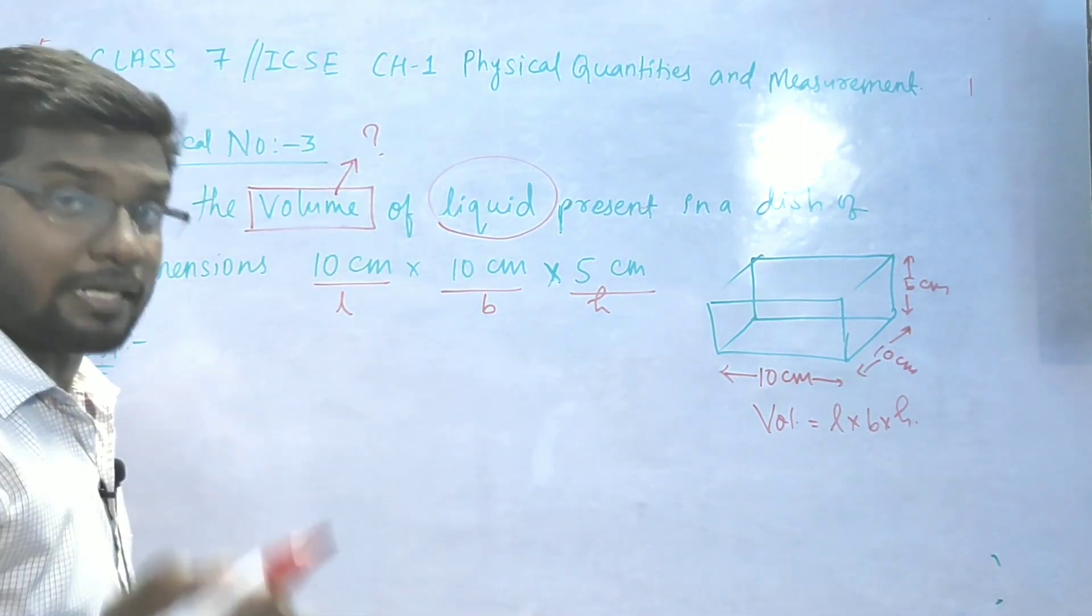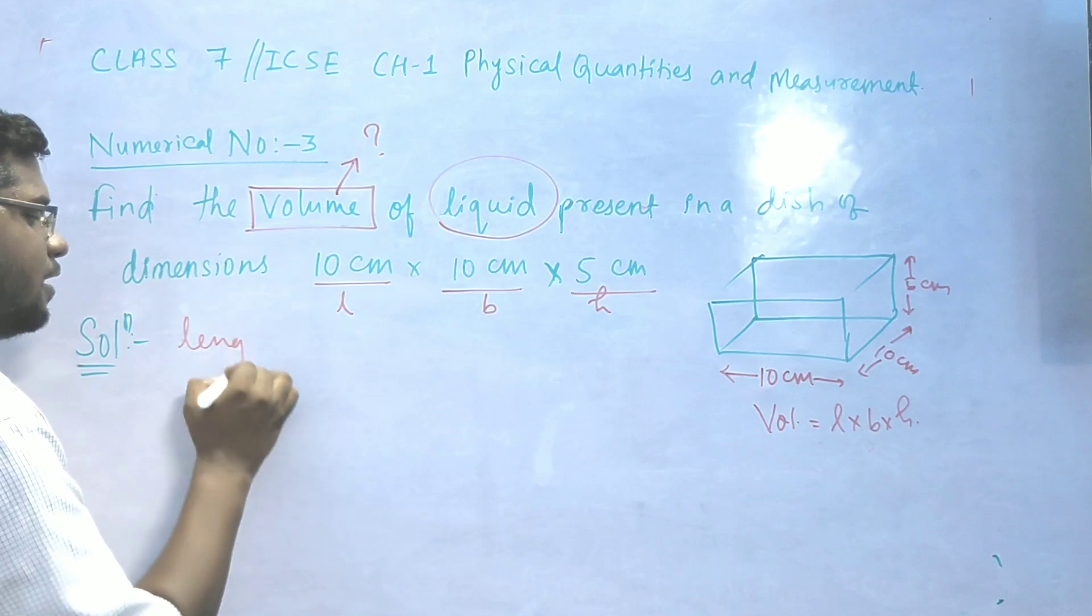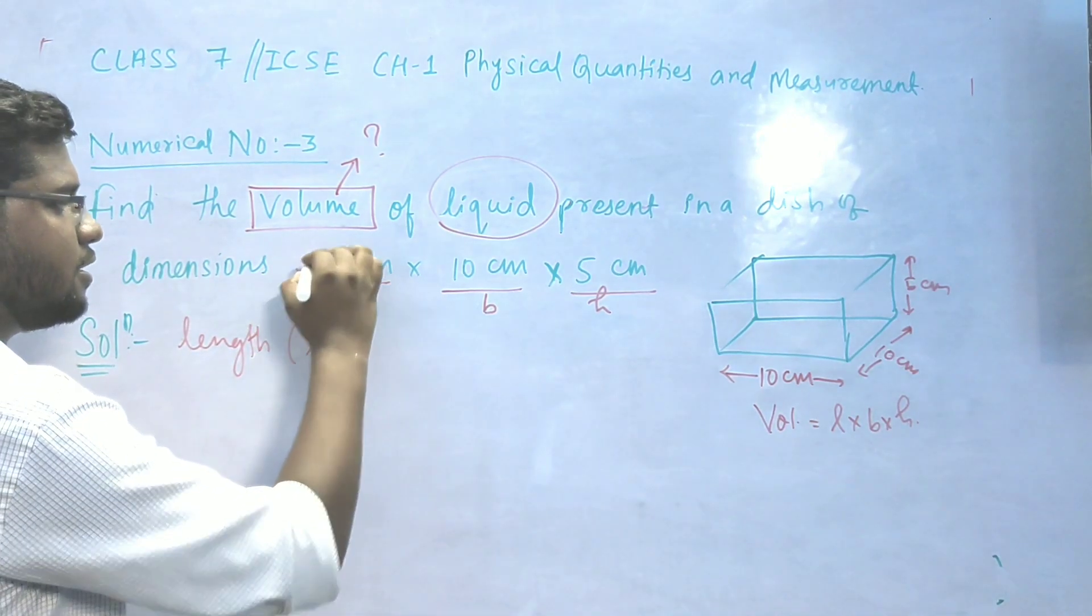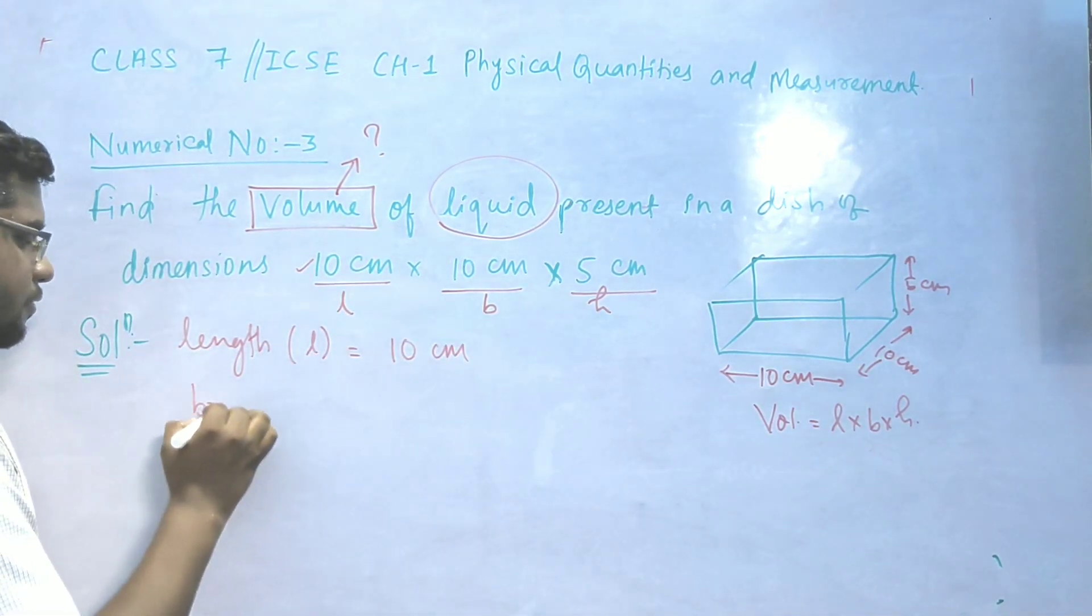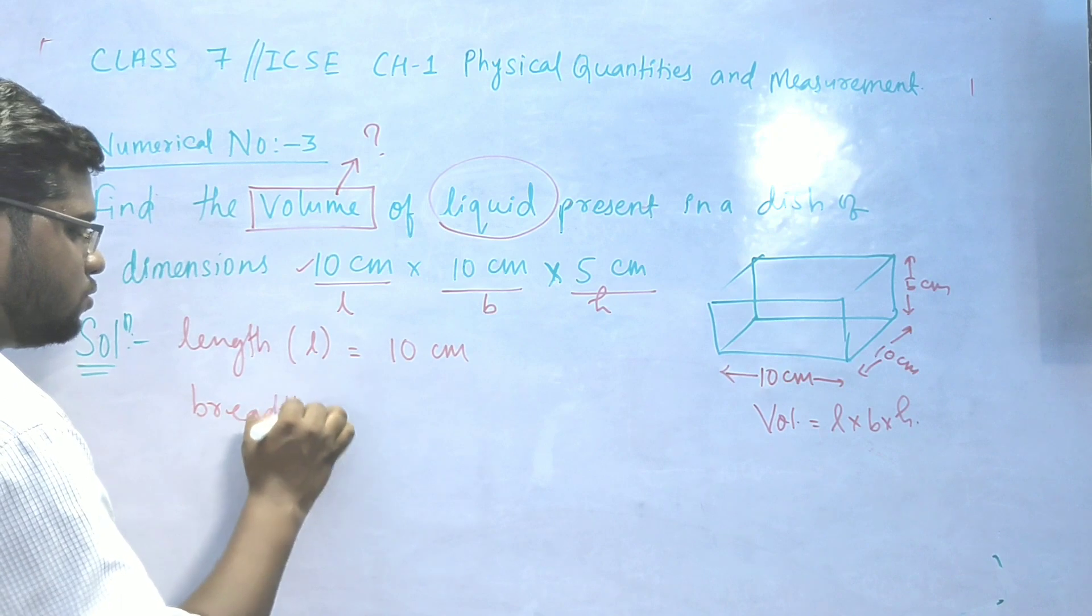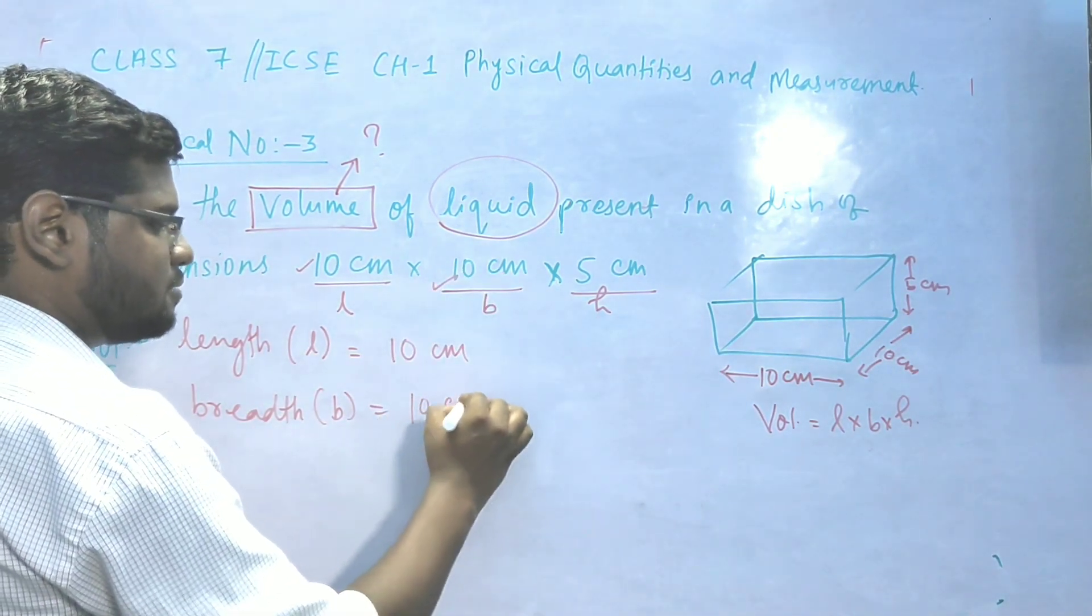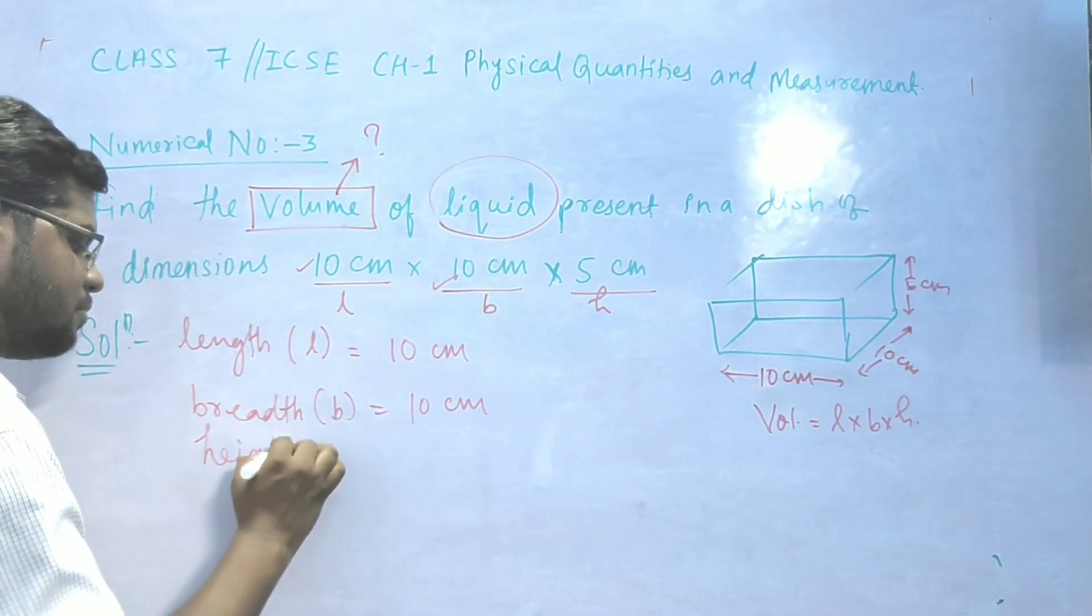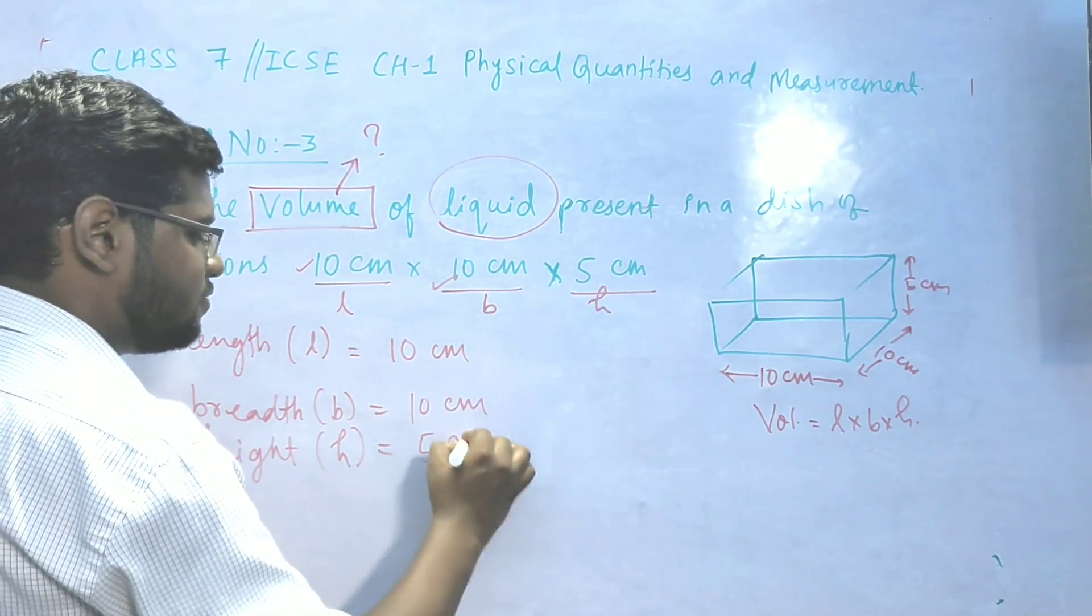So now we talk about writing technique, which we have marks. So we will write length within bracket small L, so length 10 centimeter, breadth 10 centimeter, and height 5 centimeter.